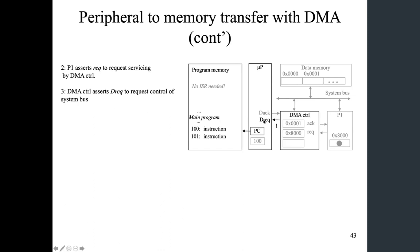DMA controller asserts the DMA request to request control of the system bus. So this control signal is to tell the microprocessor that I, as a DMA controller, I would like to use your system bus, which is this part. This system bus is, there's just one set of system bus, everybody is connected to this bus. Microcontroller, DMA controller, P1, memory.